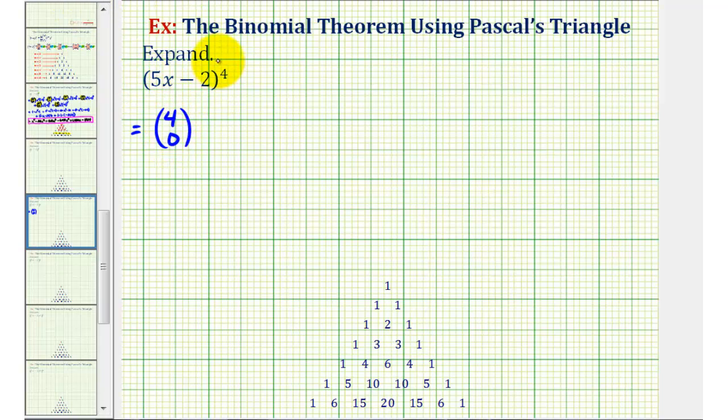Because the first term in the binomial is 5x, we'll have four factors of 5x, and the second term is negative 2, so we'll have zero factors of negative 2. So we started with 4 choose 0, and then we have four factors of 5x and zero factors of negative 2.